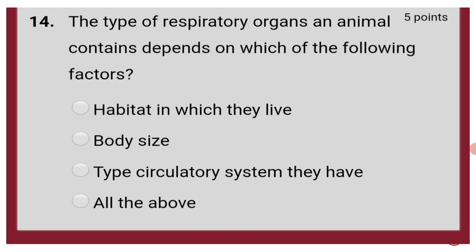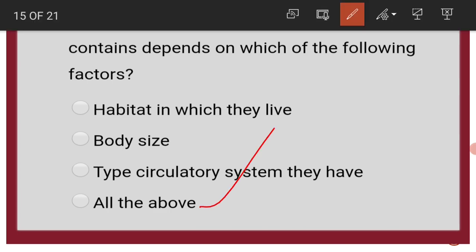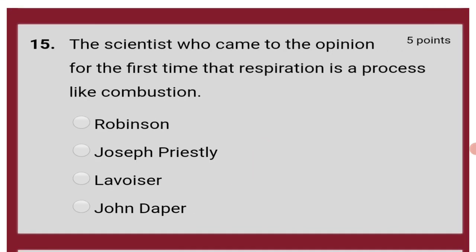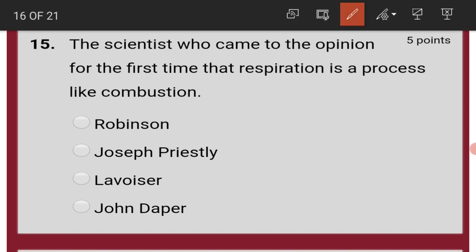The type of respiratory organs an animal contains depends on the habitat in which they live, body size, and type of circulatory system they have. The answer is all the above. The scientist who first came to the opinion that respiration is a process like combustion is Lavoisier.